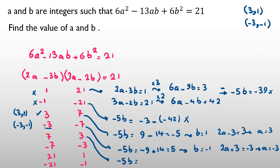For the case (negative 3, negative 7): negative 5b equals 3 times 21 minus 2 times 3, which is 63 minus 6 equals 57... actually 3 times first is 21, minus 2 times second gives negative 5b equals 15, so b equals negative 3. Substituting: 2a plus 9 equals 7, so a equals negative 1. This gives the answer a equals negative 1, b equals negative 3.